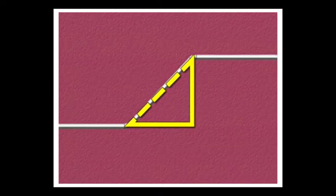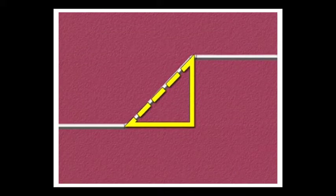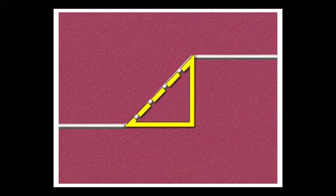This represents the dimension from the beginning of the offset to the fitting at the other end of the offset. The side of the triangle is an imaginary line from the center line of the original pipe run to the center line of the new pipe route.